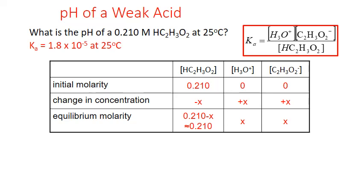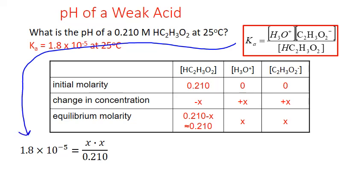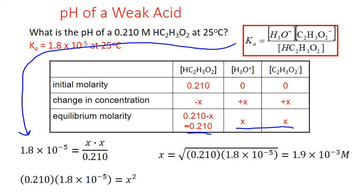Plugging the equilibrium terms into the equilibrium expression: Ka = 1.8 × 10⁻⁵ equals x times x divided by 0.210. Solving for x, we get x² = 0.210 × 1.8 × 10⁻⁵. Taking the square root of both sides, x = 1.9 × 10⁻³ mol/L. This is the equilibrium concentration of hydronium ion in our solution.